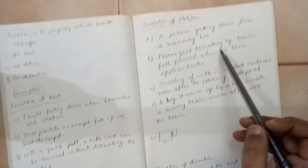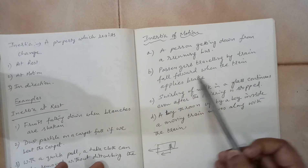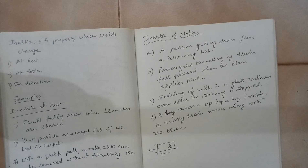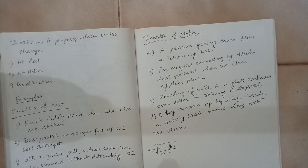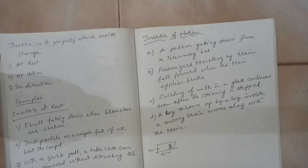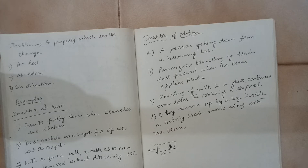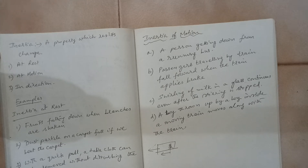Another example: passengers travelling in a train fall forward when the train suddenly applies the brakes. When the train is moving, the passengers are also moving with it. By applying the brake you have stopped the vehicle, but you cannot immediately stop the person sitting inside, so he falls in the forward direction.